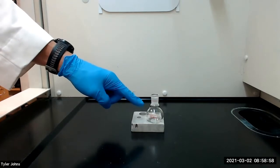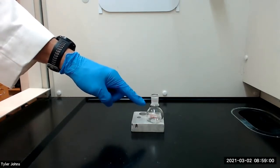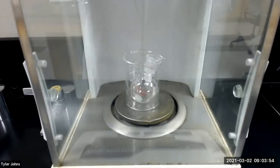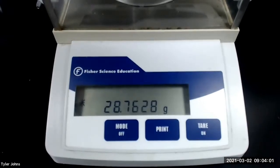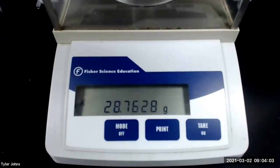To begin, we first need to pre-weigh a 25 milliliter round bottom flask. The mass of the pre-weighed 25 milliliter round bottom flask is 28.7628 grams.